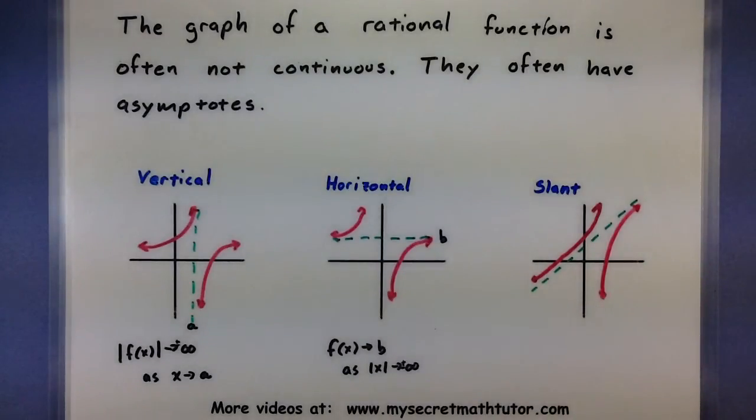Now a function could, a rational function could have any type of asymptote like a vertical or a horizontal. It might even have more than one type built into it. So maybe it has a couple of vertical asymptotes and a horizontal asymptote. Also keep in mind that a rational function might not have any asymptote whatsoever, but often times they will not be continuous.